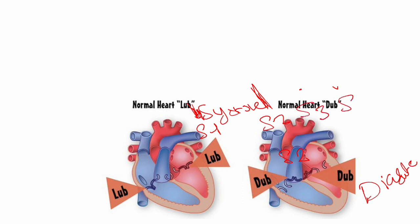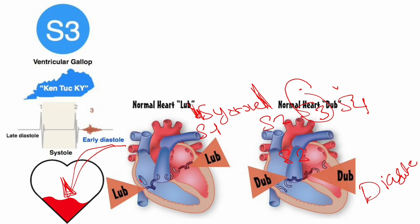S3 occurs in early diastole during the passive filling phase, and it's caused by congestion — as if we're splashing quickly to fill the heart. This means there is congestion; there is extra end-systolic volume from the previous cycle. So S3 can occur in cases of congestive heart failure or hyperdynamic circulation like pregnancy. We usually hear this as 'Kentucky, Kentucky, Kentucky.'